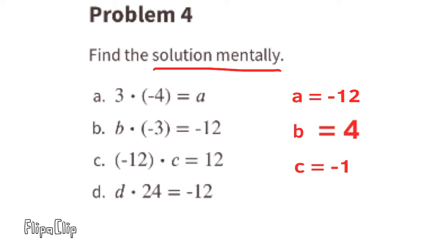Part d: D times 24 equals negative 12. We know a negative times a positive equals a negative, so D must be negative. Half of 24 is 12, so negative 1 half times positive 24 equals negative 12. D equals negative 1 half.